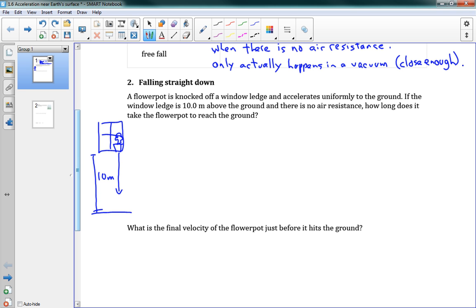We can solve this problem using our GRASS method. The acceleration is equal to g, 9.8 meters per second squared. Our displacement is 10.0 meters. And our initial speed is 0 meters per second. Notice I haven't written any directions on any of these. We're just going to deal with scalars for this part.